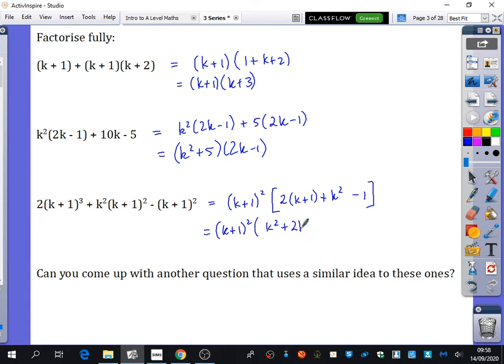k squared plus 2k plus 1. Which is equal to k plus 1, k plus 1. Good. That factorizes to k plus 1, k plus 1. Which is k plus 1 to the power of 4.